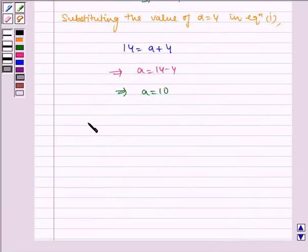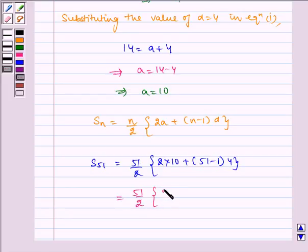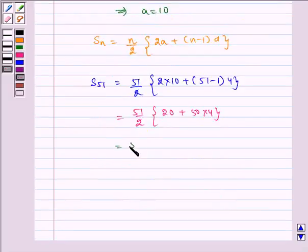Now, we have to find SN that is S51 and we know SN is equal to N by 2 multiplied by 2A plus N minus 1D. Now, S51 is equal to 51 by 2 multiplied by 2 into 10 plus 51 minus 1 multiplied by D which is 4. Which is equal to 51 by 2 multiplied by 20 plus 200.